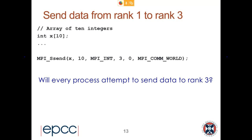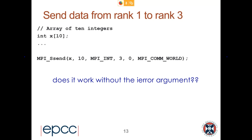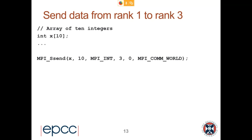If the code looked like this, would it work? Conor J has absolutely nailed it — that's exactly what will happen. If you try to run code like this it would deadlock. Alessandro asked if it works without the ierr argument — yes, because this is C-like code. In Fortran unless it's the 2008 interface you would need to provide ierr, but in C it's just a return value.